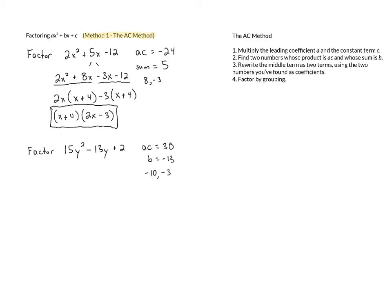So now we can rewrite the middle term as two terms using the two numbers that you found here as coefficients. So we're going to keep the 15y squared. And instead of negative 13y, we're going to write negative 10y minus 3y and then plus 2. And then finally, we can finish by grouping.